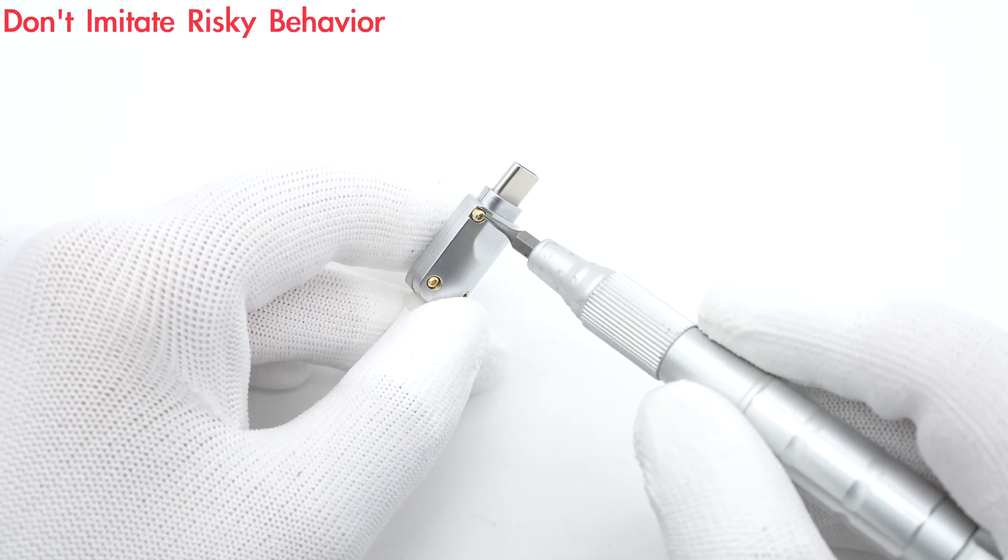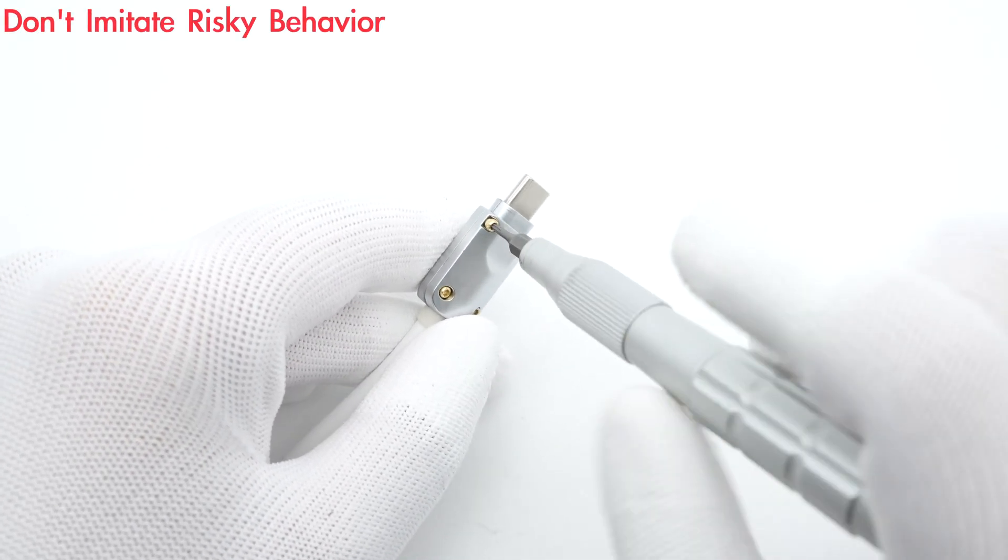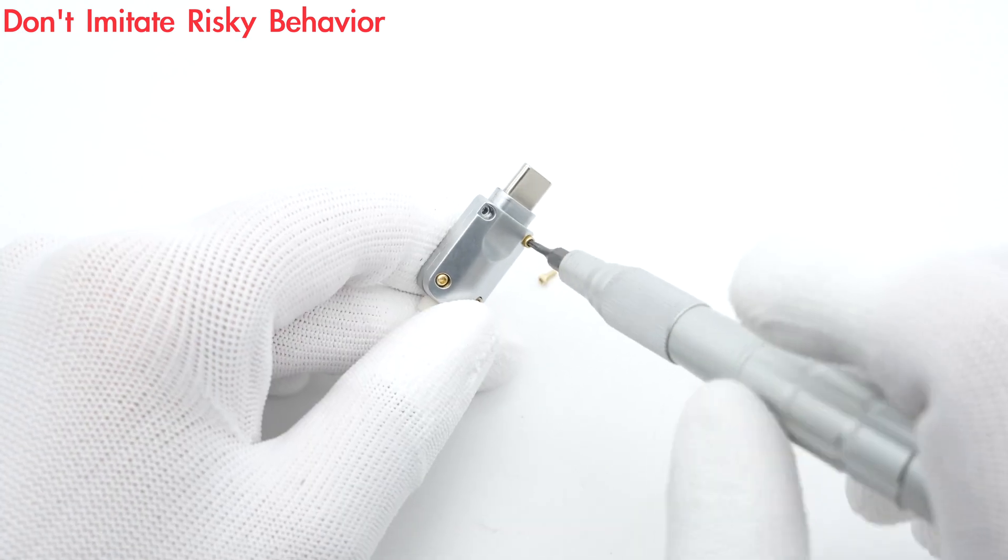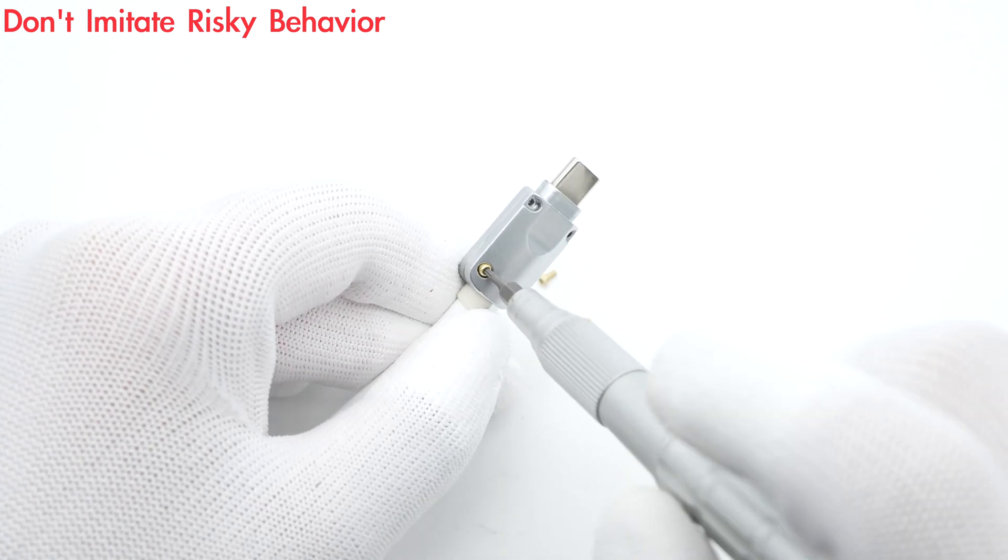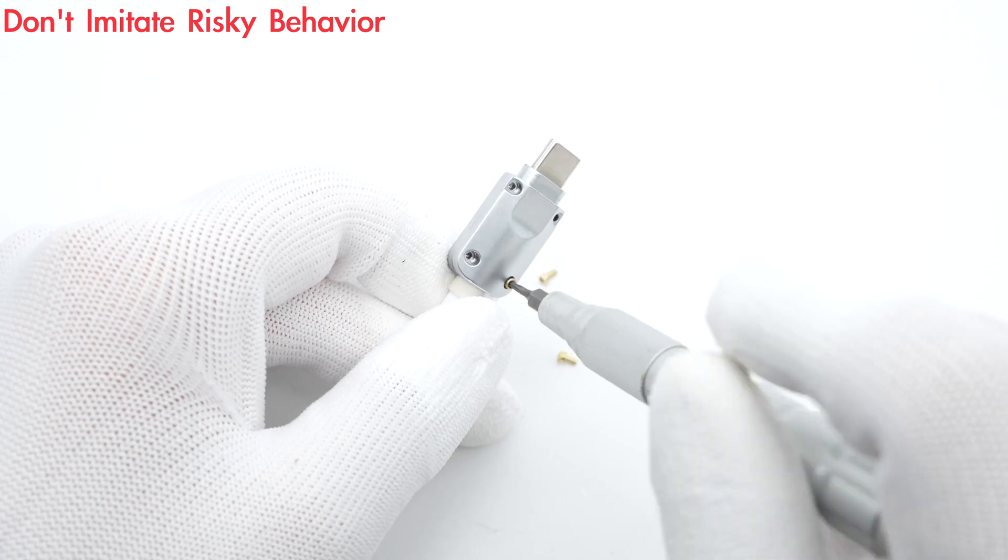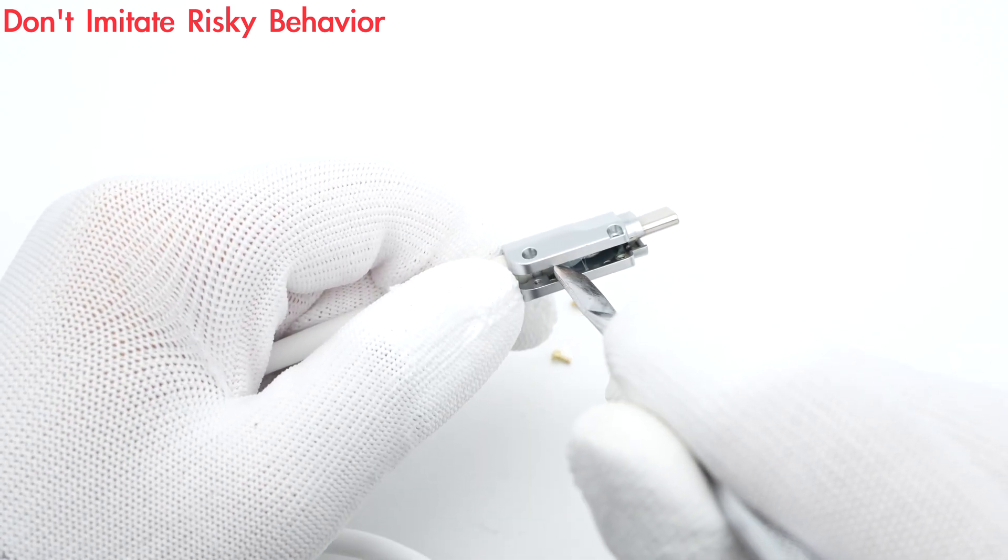Next, move to the USB-C connector. Since it's a DIY product, it's easy to take apart. Just unscrew those four fixing screws, and we can remove the metal case.